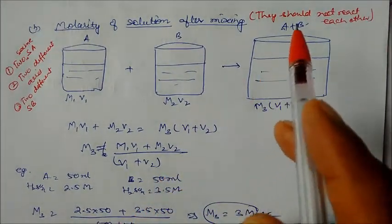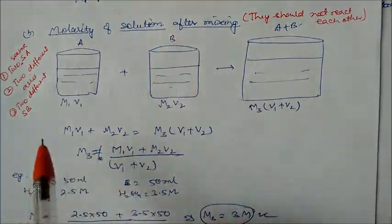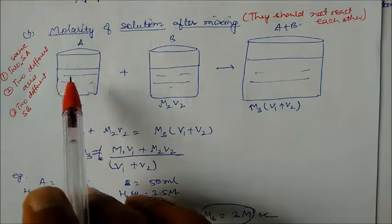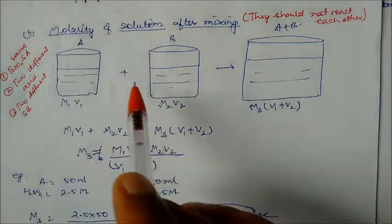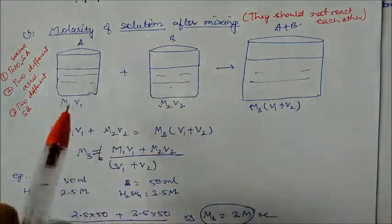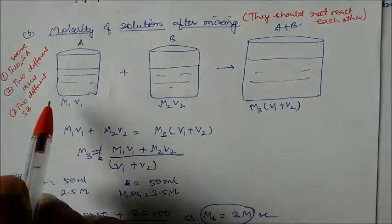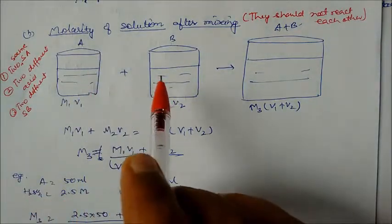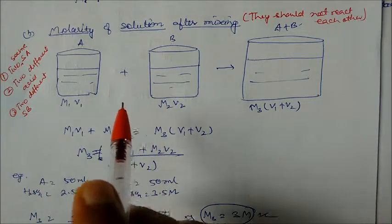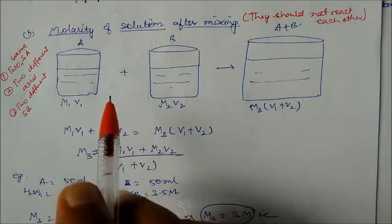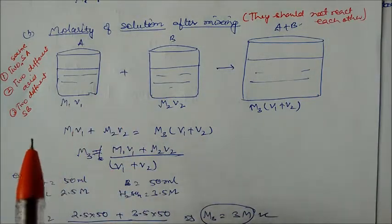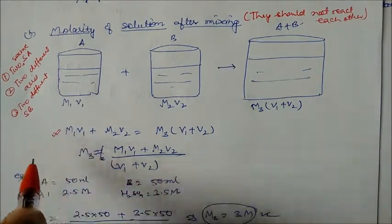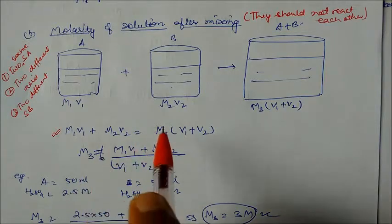For molarity of solution after mixing, the condition is that the solutions should not react with each other. Take one beaker M1V1 and another beaker M2V2. You can take two strong acids, two strong bases, or one strong acid and one strong base. For molarity we use this formula only for strong acid and strong base because weak acids and weak bases do not react completely, but strong acids and strong bases react completely.